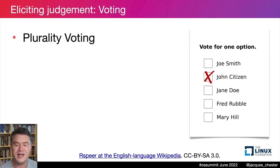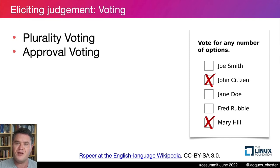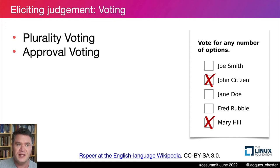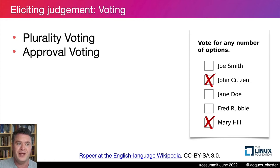Approval voting works a bit like plurality voting, except voters can now cast a vote for any number of alternatives they wish. You tally up the approvals for each candidate and that establishes the final ranking. Approval voting has nice properties: it doesn't require every expert to look at every project — it's enough that some fraction of experts sees each project at least once. It's simple, less likely to suffer from the popularity problem, and can be presented showing a single project at a time, since the question is simply: 'Is this a critical project — yes or no?'